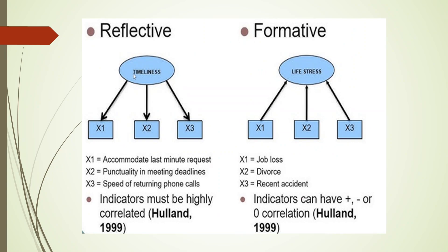Another example: life stress can happen because of job loss, divorce, or a recent accident. It is not necessary that a person gets stress only if all three incidents happen simultaneously — any one of them can cause stress in life. That is the formative model.